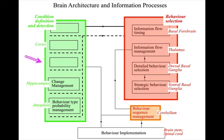Receptive fields can be recorded in the cortex. Behavioural recommendation weights associated with cortical receptive field detections can be recorded in the basal ganglia. And frequently used sequences of behaviours can be recorded in the cerebellum after the sequence has been learned. The cerebellum defines very complex receptive fields that can be used as commands to carry out the next behaviour in the sequence, once that behavioural sequence has been initiated.